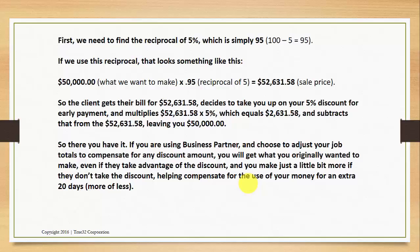So the client gets their bill for $52,631.58, decides to take you up on your 5% discount for early payment, and multiplies $52,631.58 times 5%, which equals $2,631.58, and subtracts that from the $52,631.58, leaving you your $50,000.